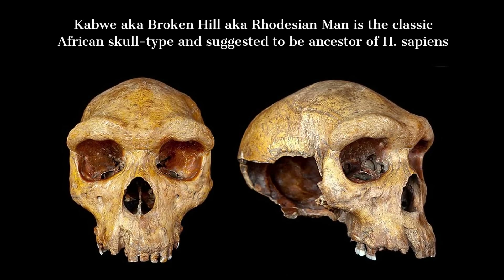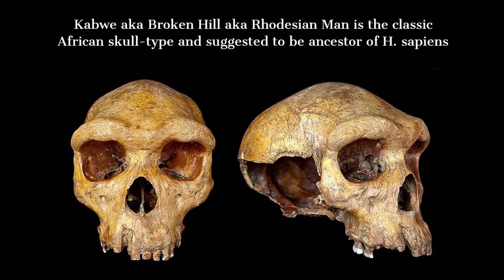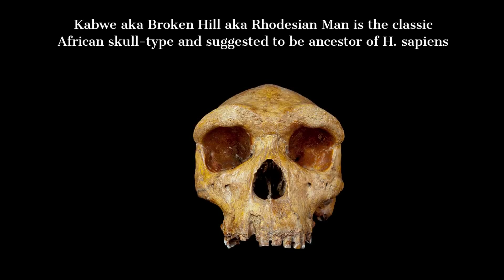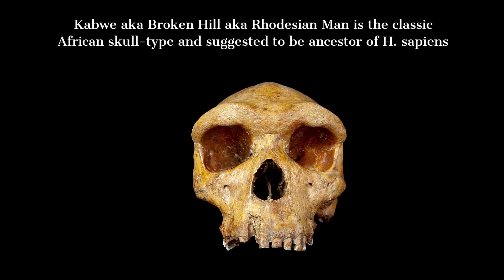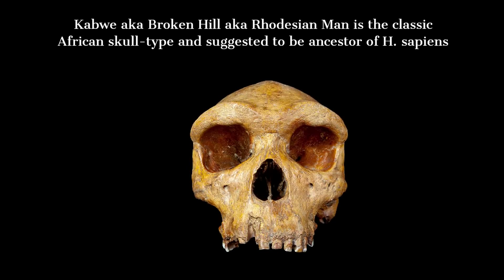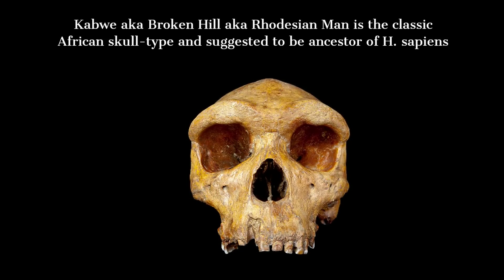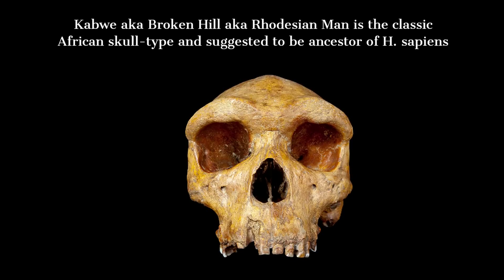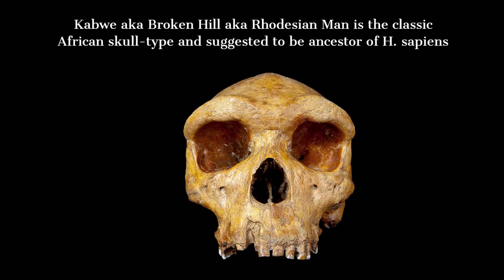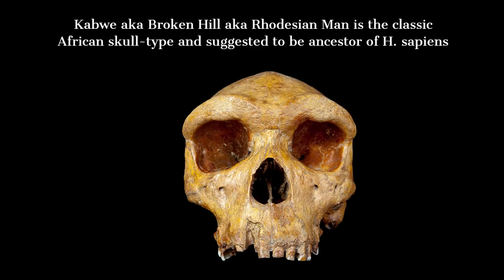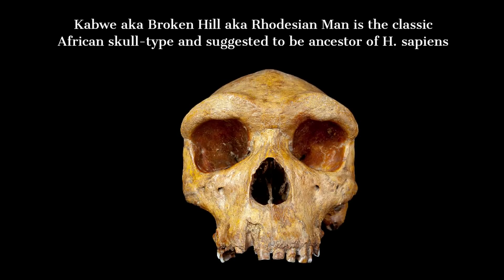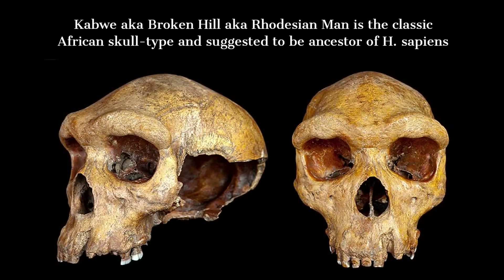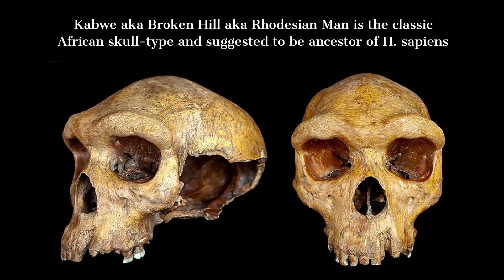The individual to whom the Kabwe cranium belonged was a robust and adaptable hominin species. With a prominent brow ridge and a large brain case, the Kabwe individual possessed physical characteristics that distinguished them from earlier human ancestors, and foreshadowed the emergence of our own species, Homo sapiens. During this era, the region surrounding Kabwe boasted a diverse landscape — a time when grasslands expanded across the African continent, interspersed with woodlands and scattered water sources.